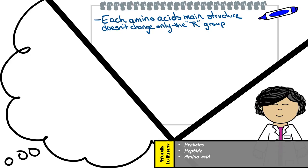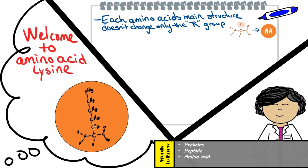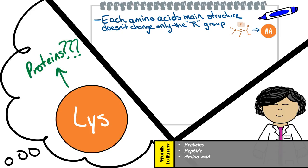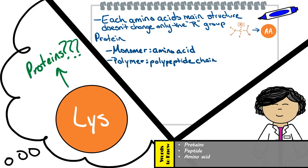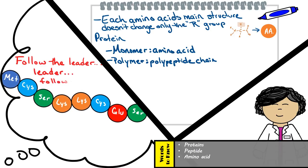Each amino acid's main structure does not change — only the R group is different — which is why we often illustrate amino acids with a color-coded circle and an abbreviation of their name, such as this one for the amino acid lysine. Amino acids are the monomers of proteins, so in order to make a polypeptide chain, which is a protein polymer, there must be a lot of amino acids bonded together by these peptide bonds.